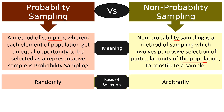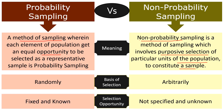Basis of selection: in case of probability sampling, the basis of selection is random, whereas in case of non-probability sampling, the basis of selection is arbitrary. When it comes to opportunity of selection, it is fixed as well as known in case of probability sampling. On the other hand, in case of non-probability sampling, the opportunity of selection is neither specified nor known.